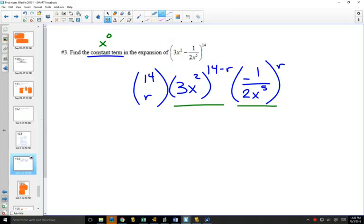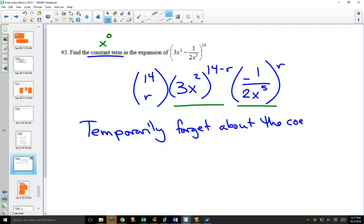Whereas the last question, we could just look at it and say r is 6. This one is not so easy because there's x's in both brackets. So what we can do is temporarily forget about the coefficients, forget about all the things that affect numbers in front. 14 choose r, whatever value r is, that's going to be a number. That's not going to affect my x's. I'm looking for something to be x to the 0.